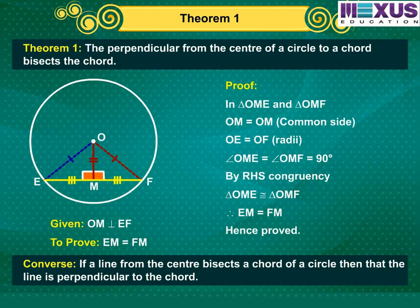Let's see the converse of this. It states if a line from the center bisects a chord of a circle, then that line is perpendicular to the chord, which is also true. Let's learn its proof in the next slide.